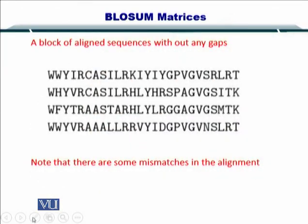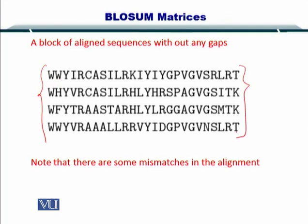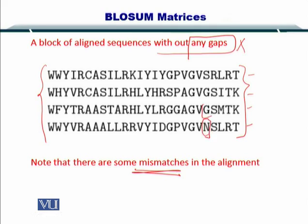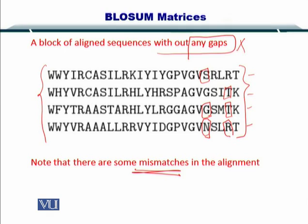So how does this block look? Here is a block with four protein sequences. Note that in this portion of protein sequences you do not have any gap — gaps are not allowed. But of course there may be some mismatches; for instance, G is replaced by an N or S, as well as some other substitutions. The only thing to remember is that in a block, only gaps are not allowed. Matches and mismatches are fine.